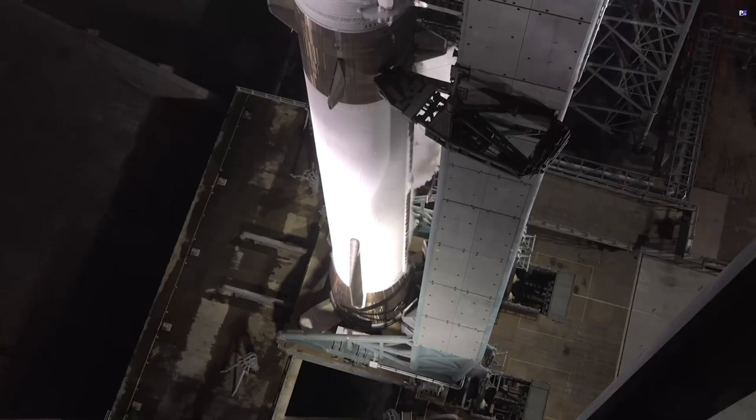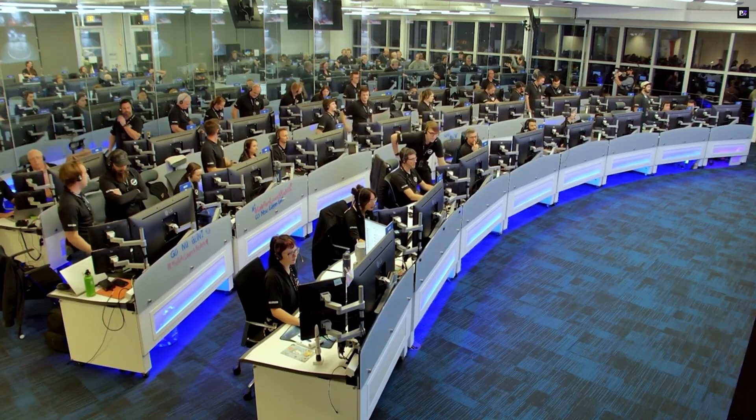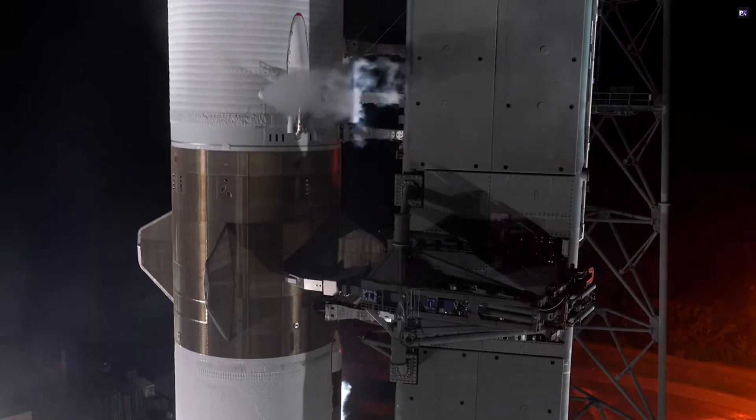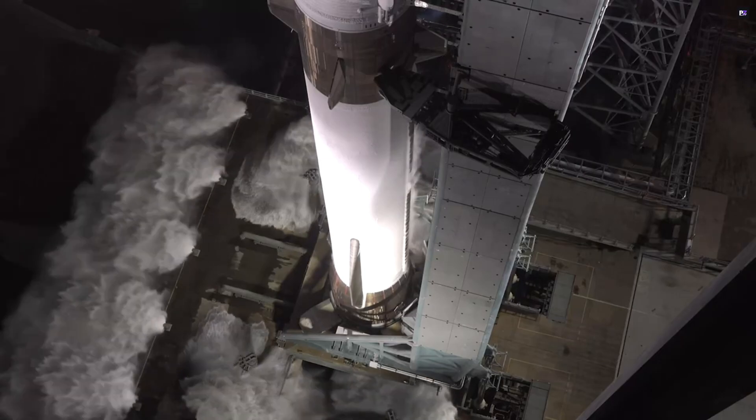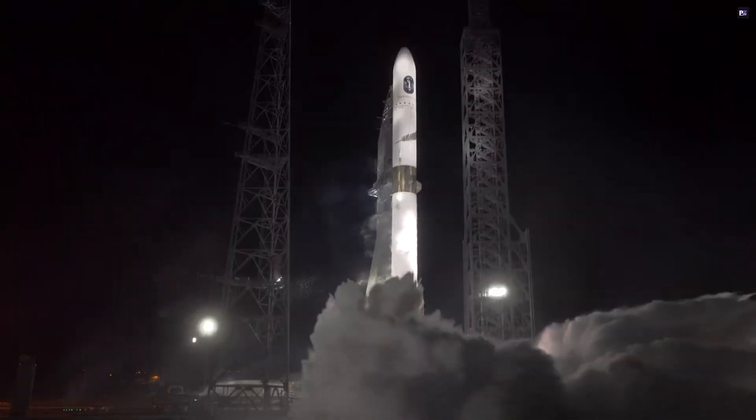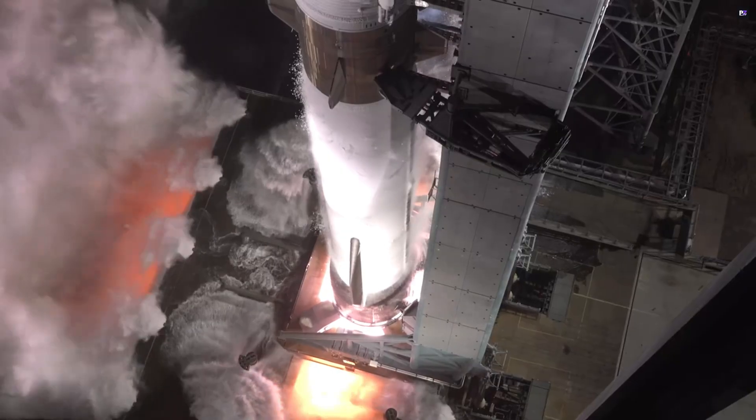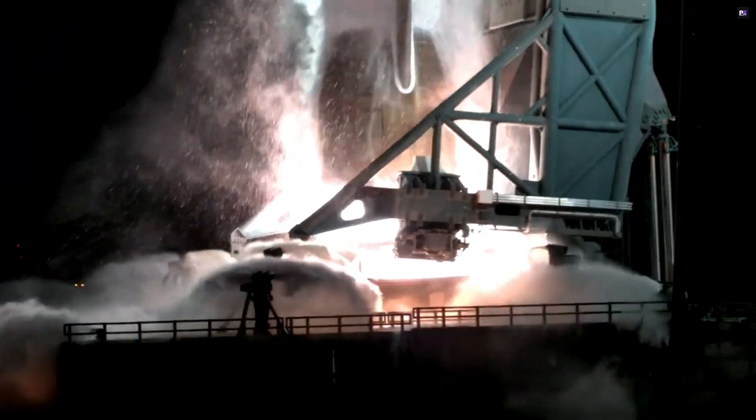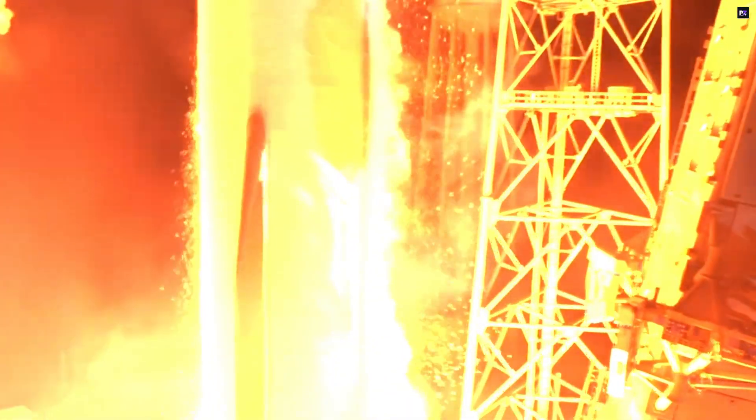The New Glenn launch vehicle, which carried the Pathfinder, is an impressive piece of engineering itself. It's powered by seven BE-4 engines and boasts a reusable first stage built for up to 25 flights, significantly reducing launch costs. With its 7-meter payload fairing, New Glenn can transport larger payloads than many conventional rockets. The entire Blue Ring architecture represents a significant leap forward in creating adaptable and mobile space platforms to meet the evolving demands of modern orbital infrastructure.